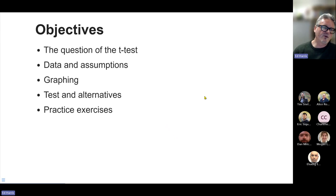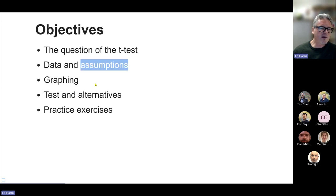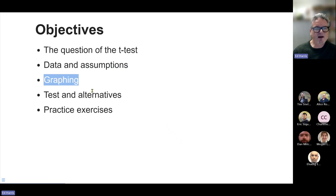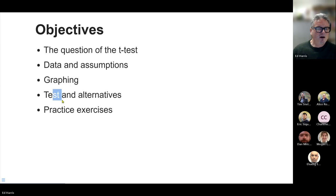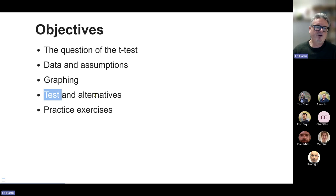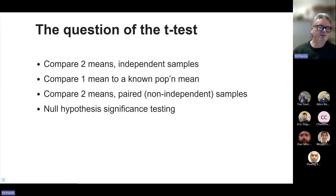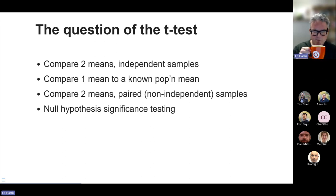Here's what we're going to talk about today: what kind of question you ask with the t-test; the data you need and the assumptions you make; several graphs related to graphing a t-test — one of my favorite kinds of graphs to make; the test itself and how to perform it in R — we'll perform a number of t-tests; and we'll talk about alternatives to the t-test if your data don't adhere to the assumptions. Here's an overview, and then we'll look at each in turn and do some examples before we finish today.